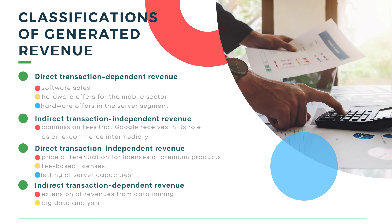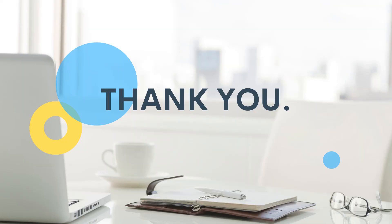Lastly, the indirect transaction independent revenue includes extension of revenues from data mining and big data analysis, also known as the selling of user data. It includes high revenue potential but with high risk due to problems of acceptance among users and potential user churn, which can negatively influence Google. The case focused mainly on revenue generation. With all of the mentioned measures, each one has different levels of revenue potential and different risk levels — from low to high — depending on the different factors involved. It can be concluded that not all kinds of advertising revenues are considered for Google to continue its great legacy in terms of revenues.